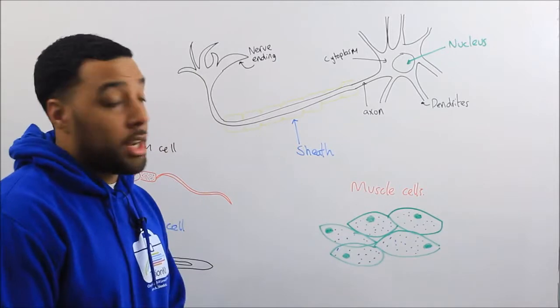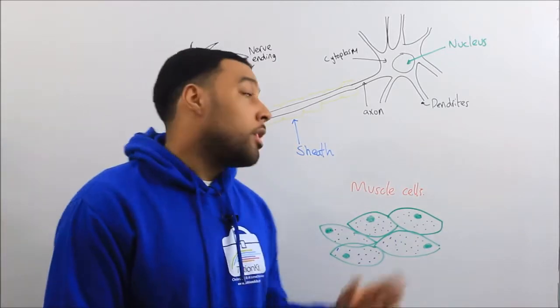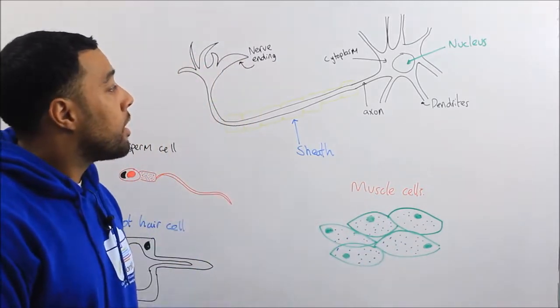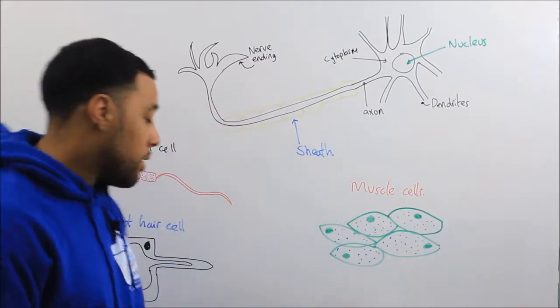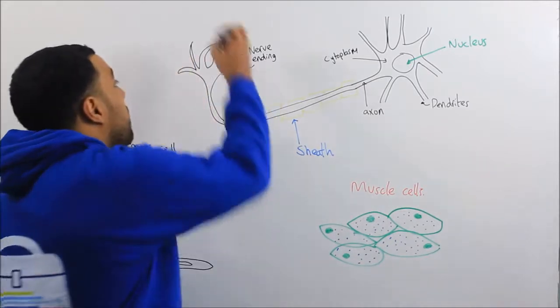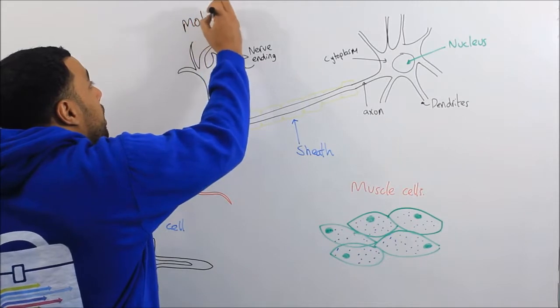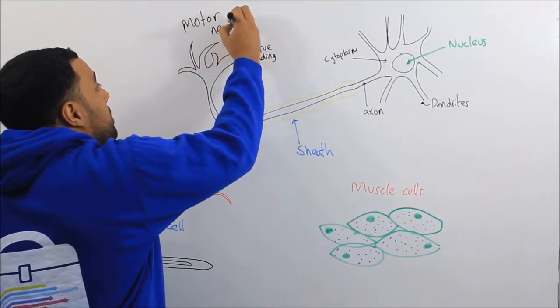Some examples of specialized cells that you will need to know for your exam are here on the whiteboard. Our first one, this cell here, this would be called our motor neuron cell.